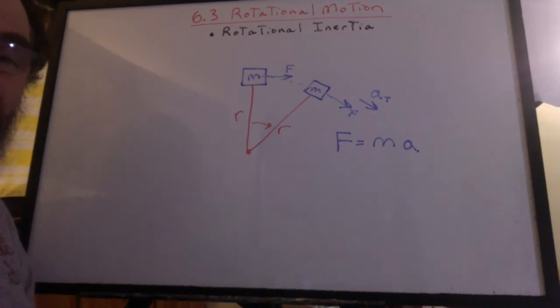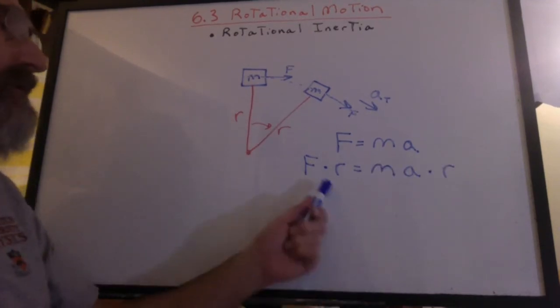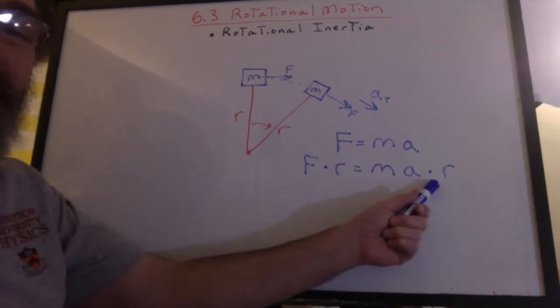Now if you think back to earlier in the year, you know that we can multiply the force times this radius and we have a torque. Well, if I multiply that side by r, I have to multiply this side by r as well.